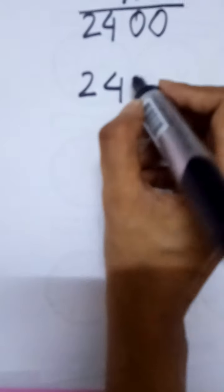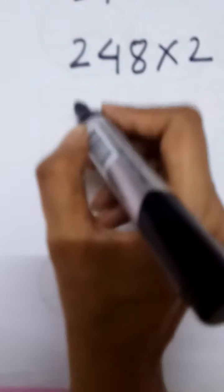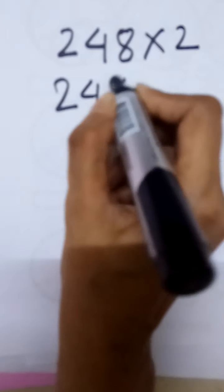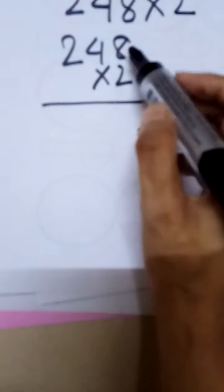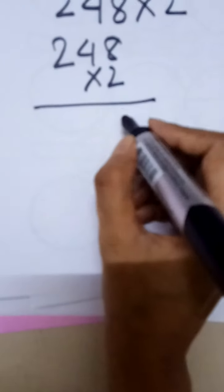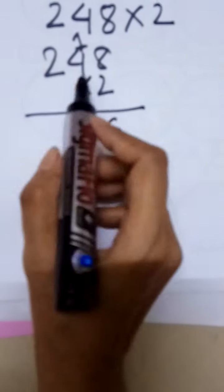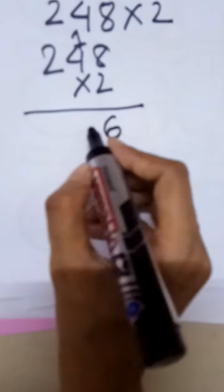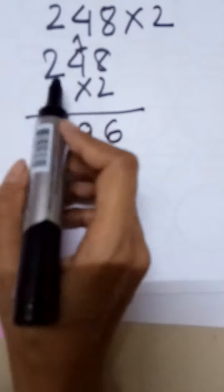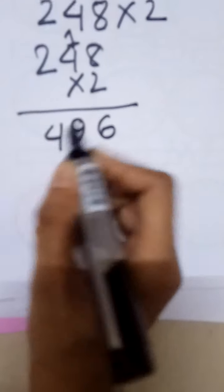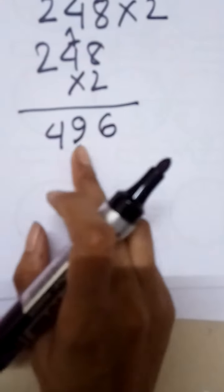Another one: 248 multiply by 2. We have to write it vertically. 8 times 2 equals 16, write 6 and carry 1. 4 times 2 equals 8, plus 1 equals 9. 2 times 2 equals 4. The answer is 496.